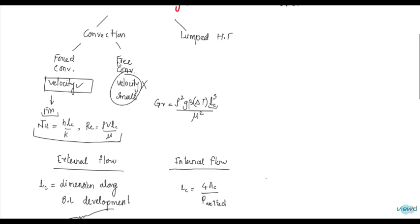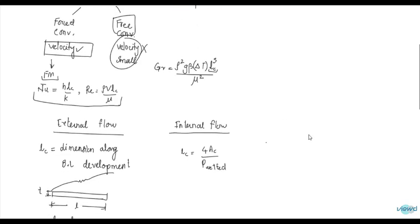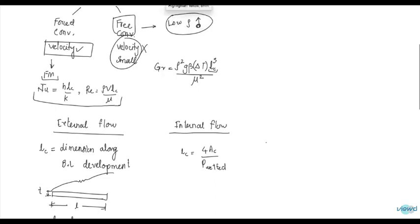Now in the case of free convection — this is the important topic we are going to see. Free convection is based on the principle that low-density particles move to a higher altitude. So low-density particles move upward.